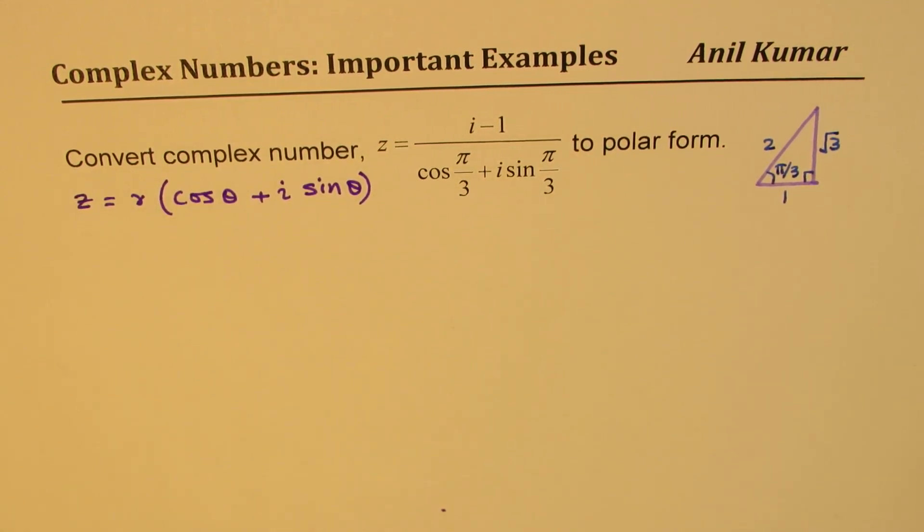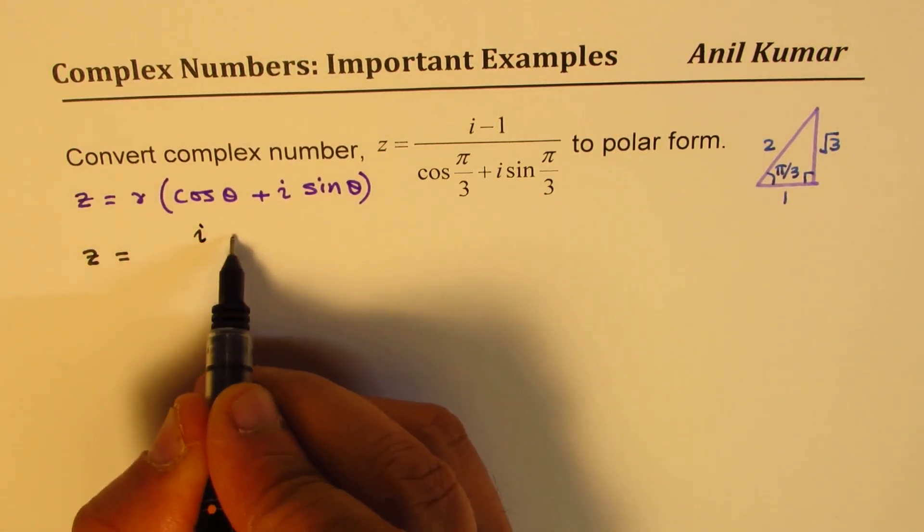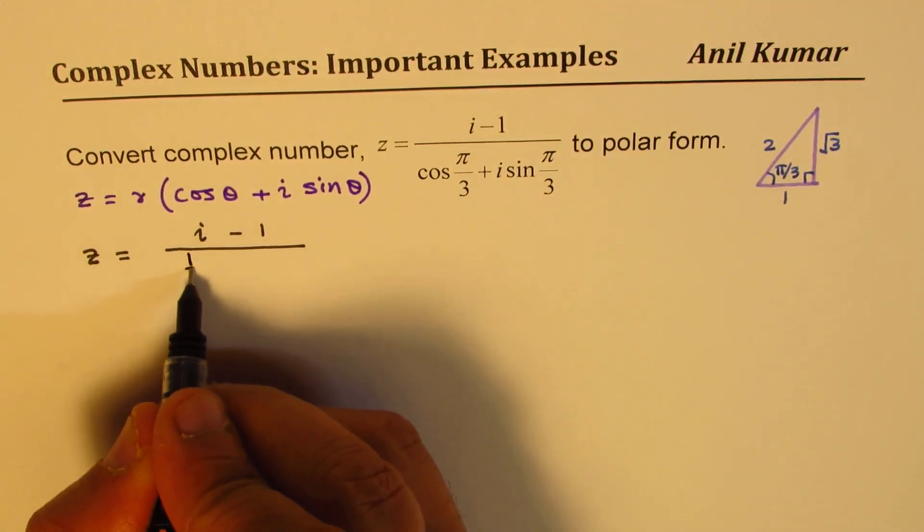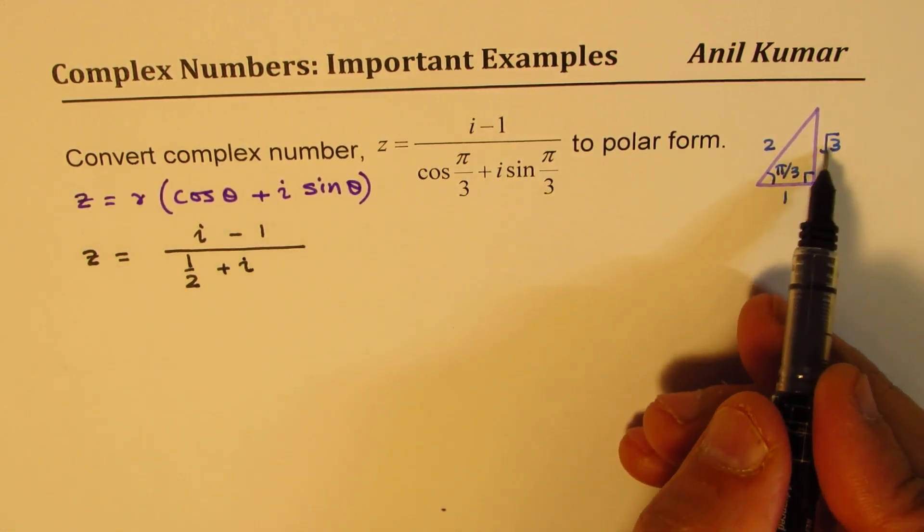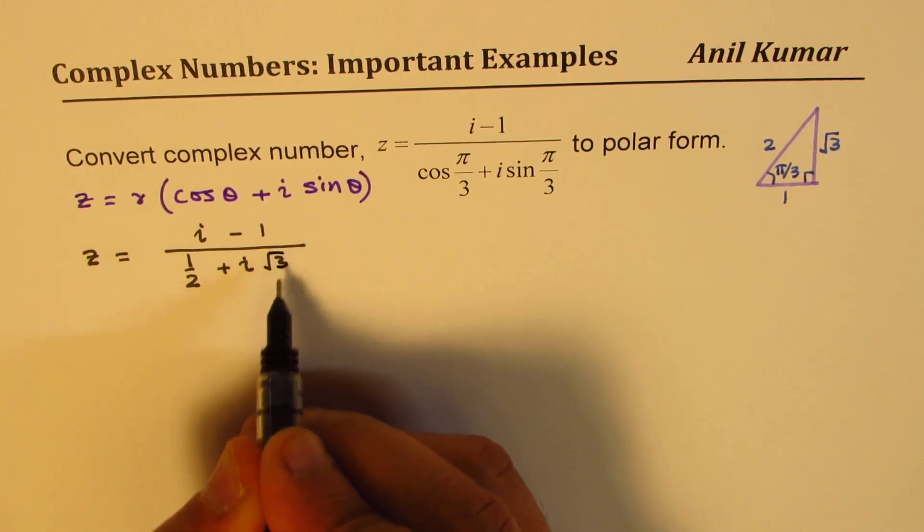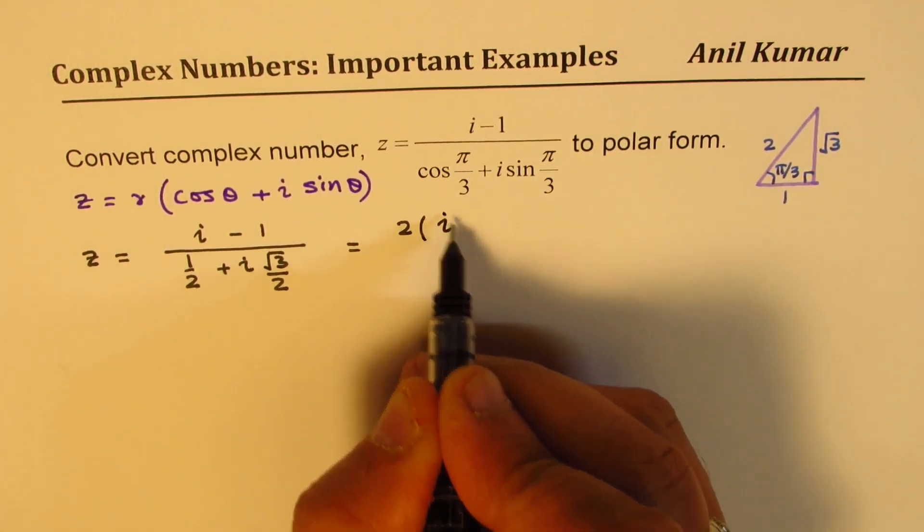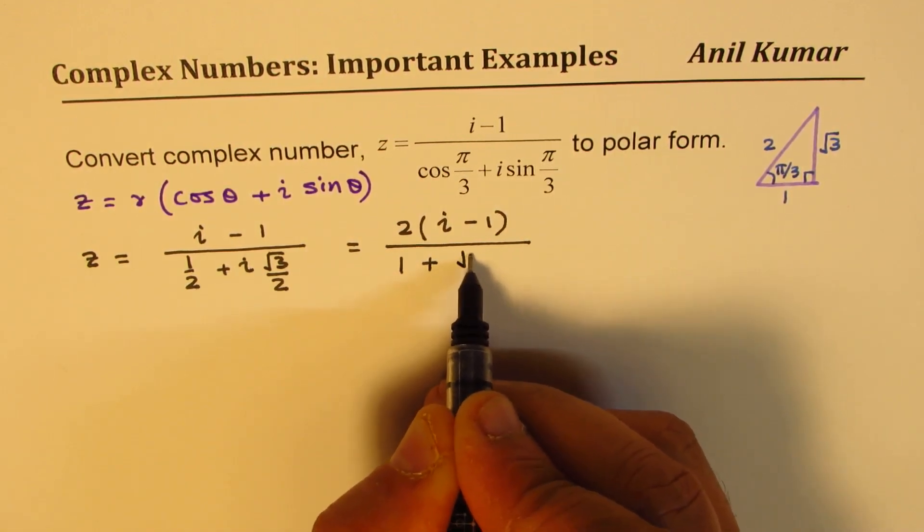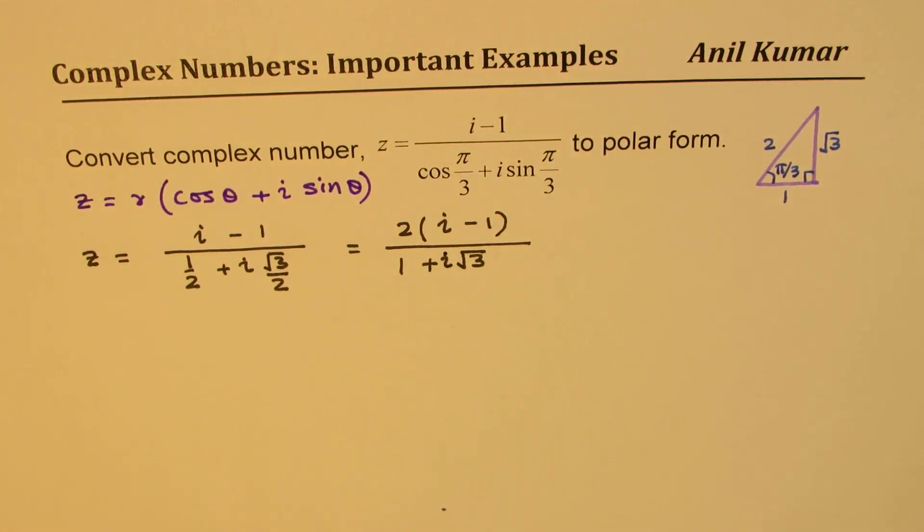Now we can write the complex number z as equal to i minus 1 over cos π/3 is 1/2, so I will write this as 1/2 plus i sin π/3 which is √3 over 2. Now this could be simplified. We could take 2 in the numerator: i minus 1 over 1 plus √3 i. So that is the complex number which we have.